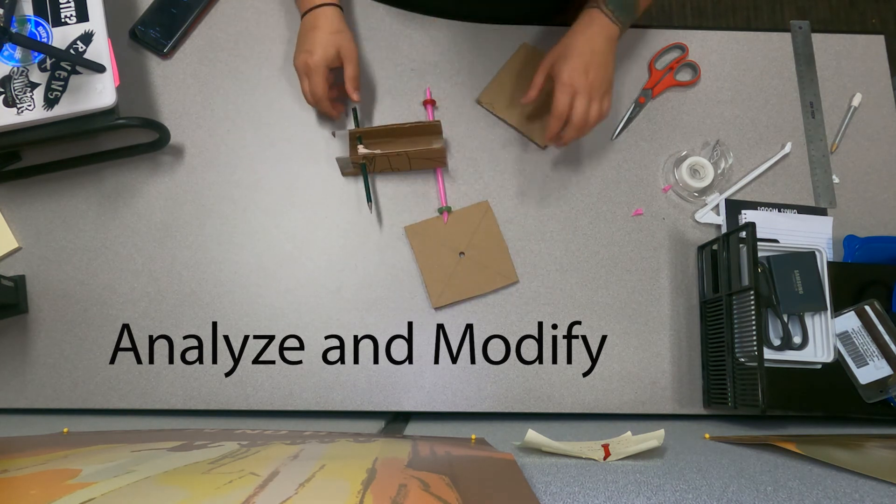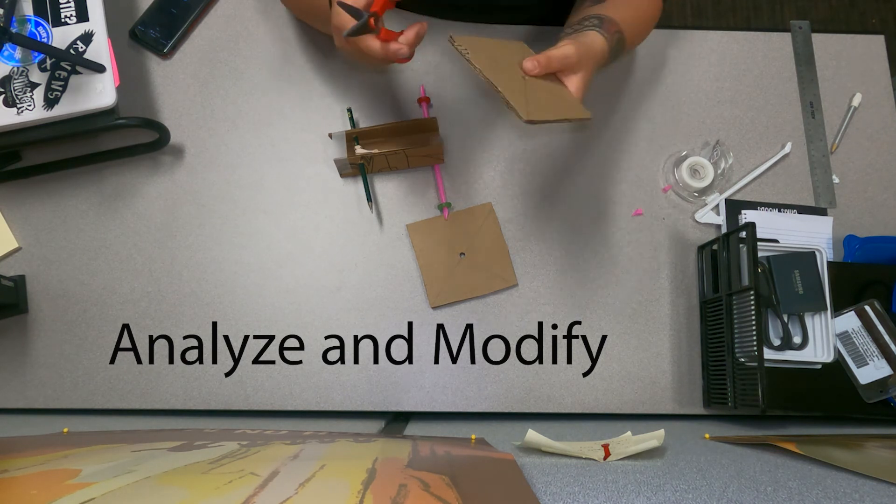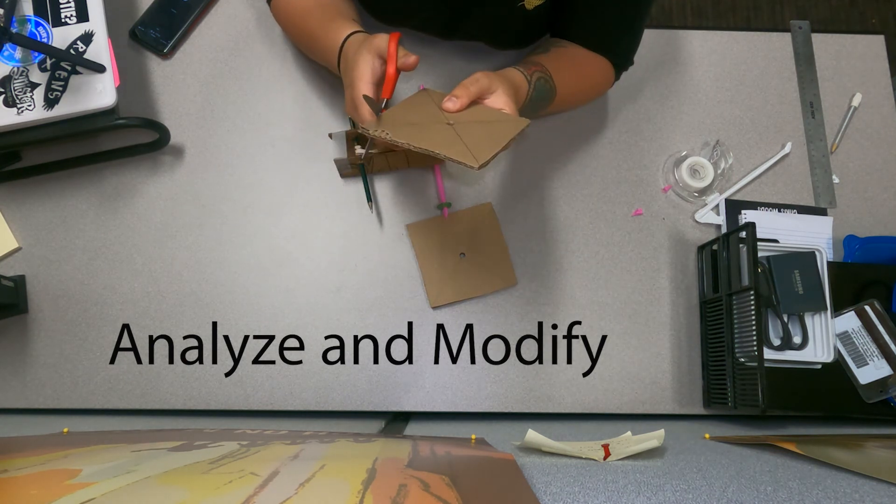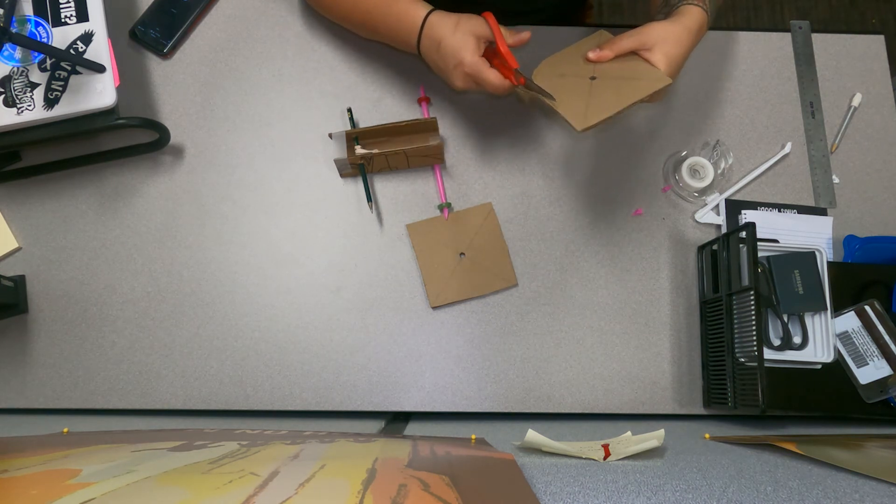I think that we'll take the wheels back off and we'll use the scissors to make them round and that might help us get the rover moving. So what you can do is cut one of them into a circle.